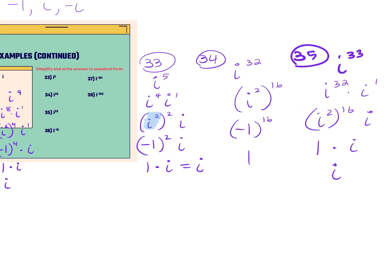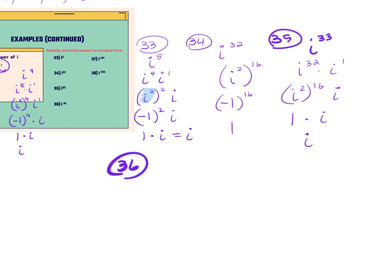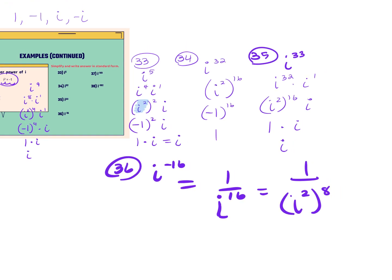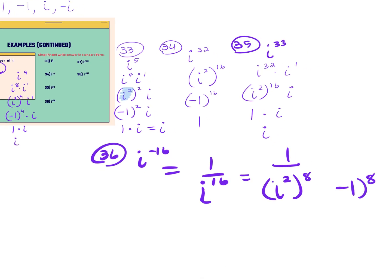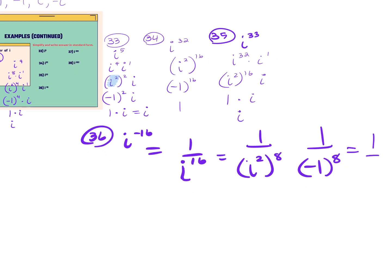Number 36 has a negative exponent. A negative exponent makes it a fraction, so i to the negative 16 means move it under a 1 and make the exponent positive: 1 over i to the 16th. Change that 16 to 2 times 8, giving i squared raised to the 8th power. Change i squared to negative 1. Negative 1 raised to an even power becomes positive 1. So 1 over 1 — the final answer is 1.